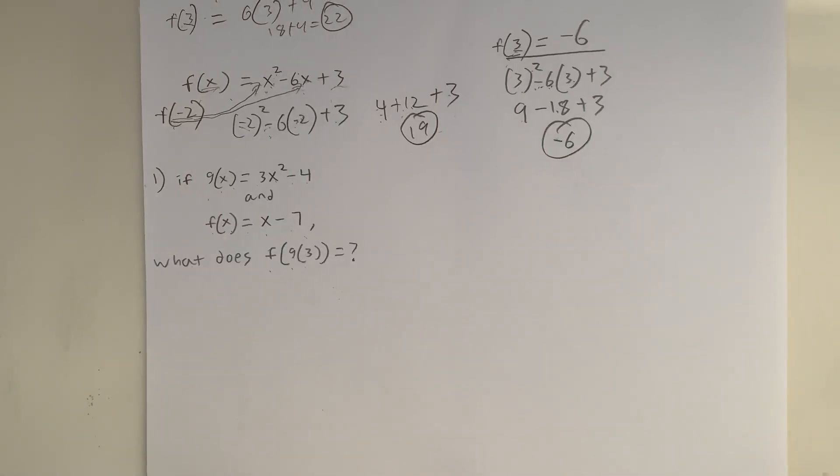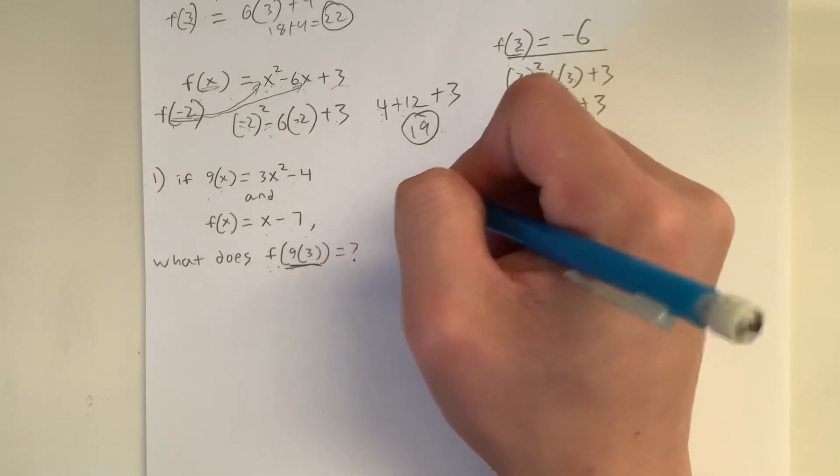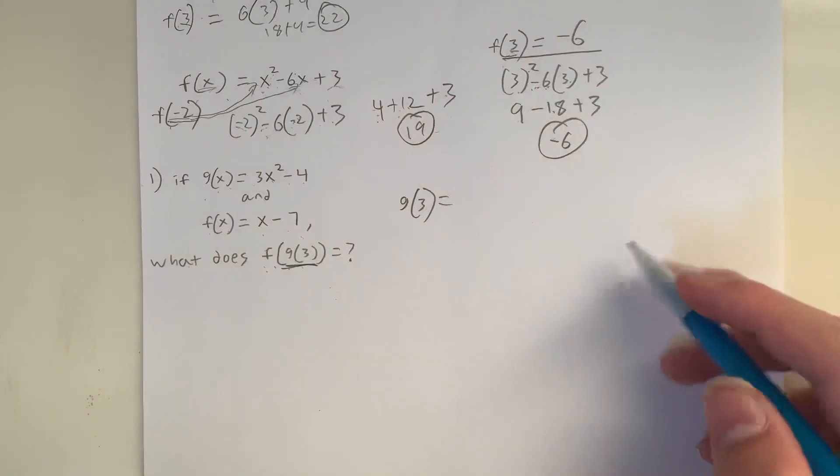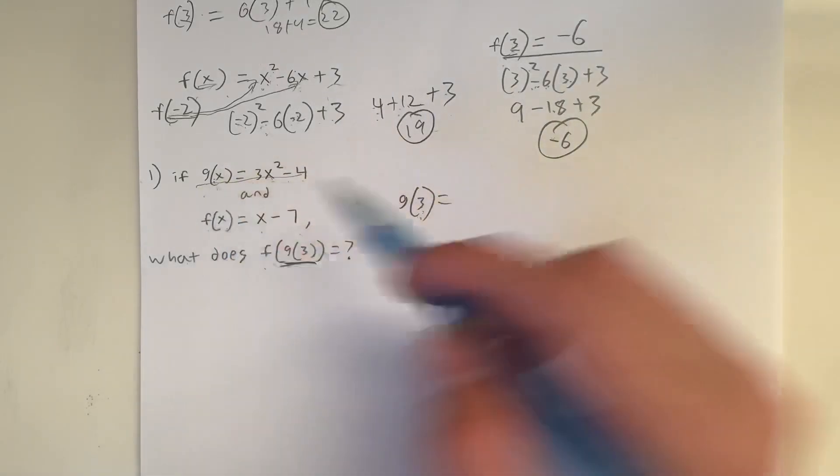So what we need to do when you see a double function is evaluate what's inside first. So what's the value of g(3)? g(3) is equal to, whenever you plug in the value of 3 for the value of x inside this equation, the g(x) equation.